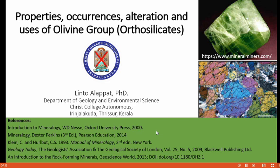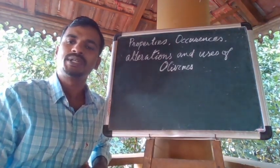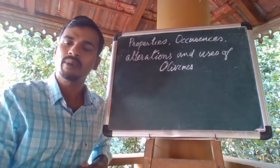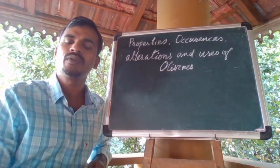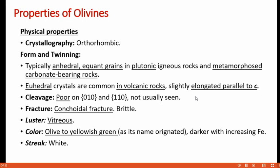The references cited in this lecture are shown in the figure. When we talk about properties, we broadly differentiate them into physical properties and optical properties. Olivine crystallographically belongs to the orthorhombic system and shows typical occurrence of anhedral to equant grains in plutonic igneous rocks and metamorphosed carbonate-bearing rocks.